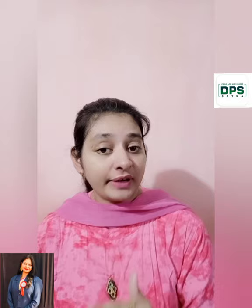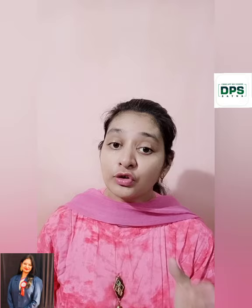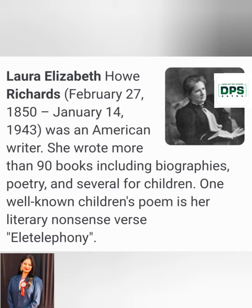Let us see what is there in the poem. Open your textbook to page number 55 and be ready with your notebook and your pencil to underline the hard words and note them down. But before starting off with the poem, let us see something about the poet Laura Elizabeth Richards. She was born on 27th February 1850 and died on 14th January 1943. She was an American writer who wrote more than 90 books including biographies, poetry, and several for children. One well-known children's poem is her literary nonsense verse, Elie Telephony.